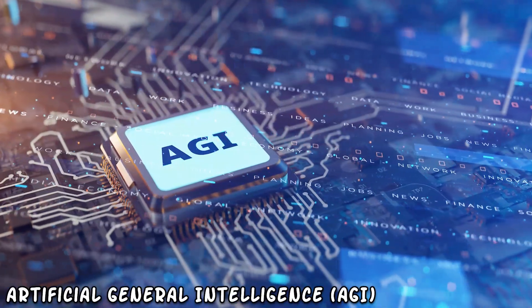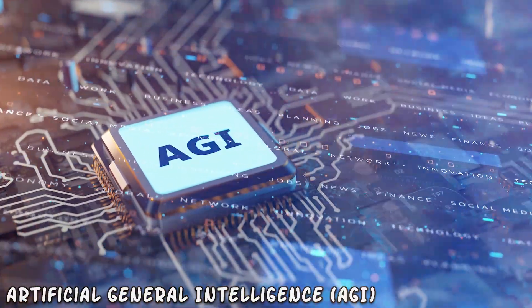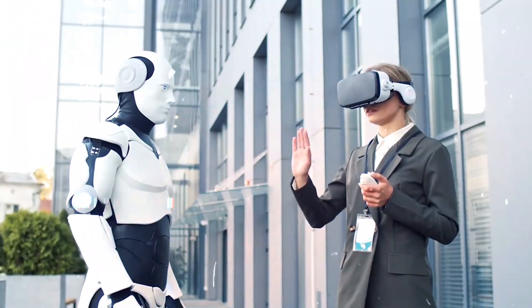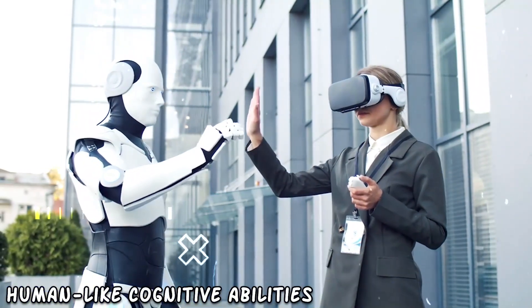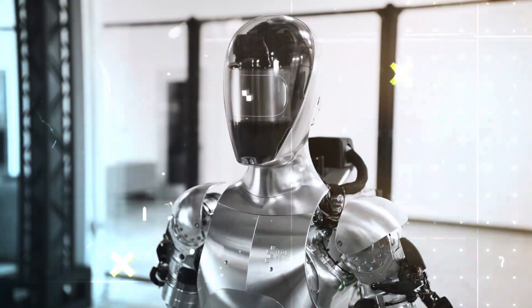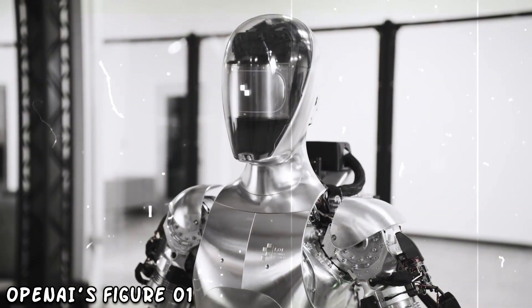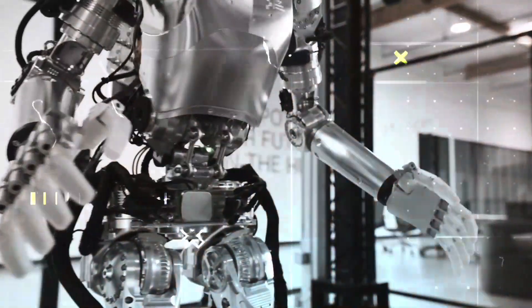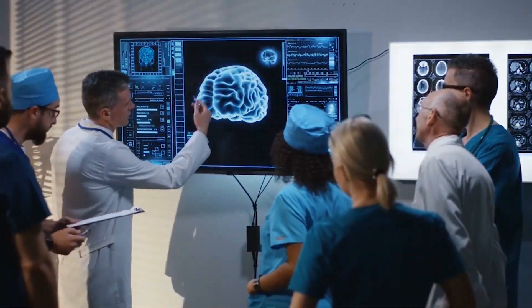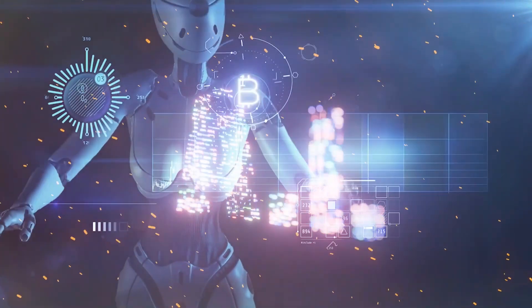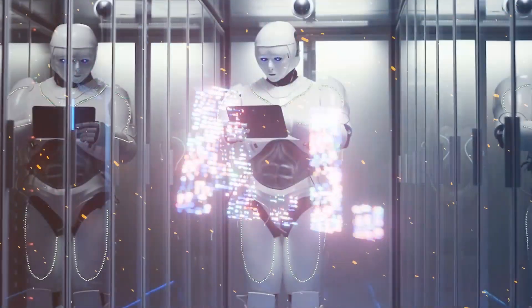In the realm of science fiction, the concept of Artificial General Intelligence has long captured the imagination, depicting a future where machines possess human-like cognitive abilities. With the advent of OpenAI's Figure 01, this vision edges closer to reality, heralding a new era where robotics and AI converge to blur the lines between human and machine capabilities.